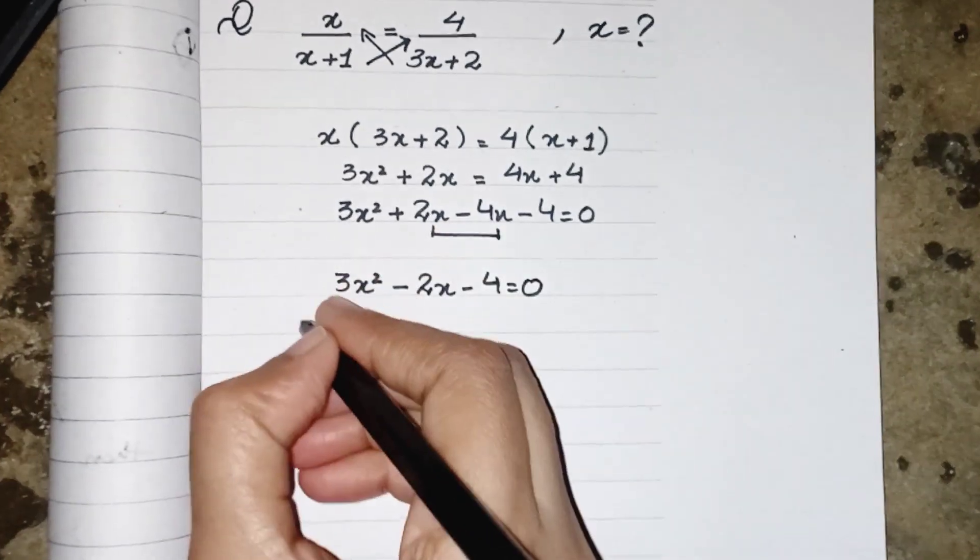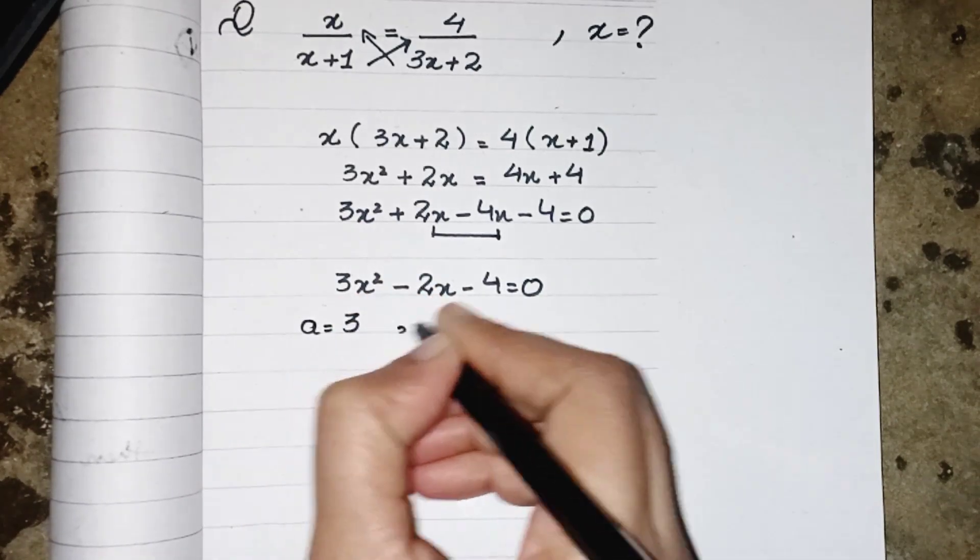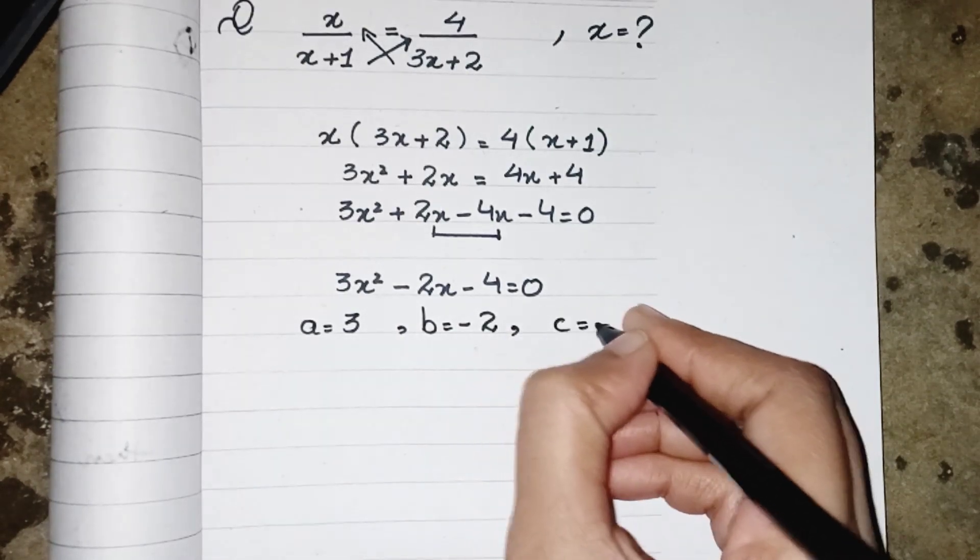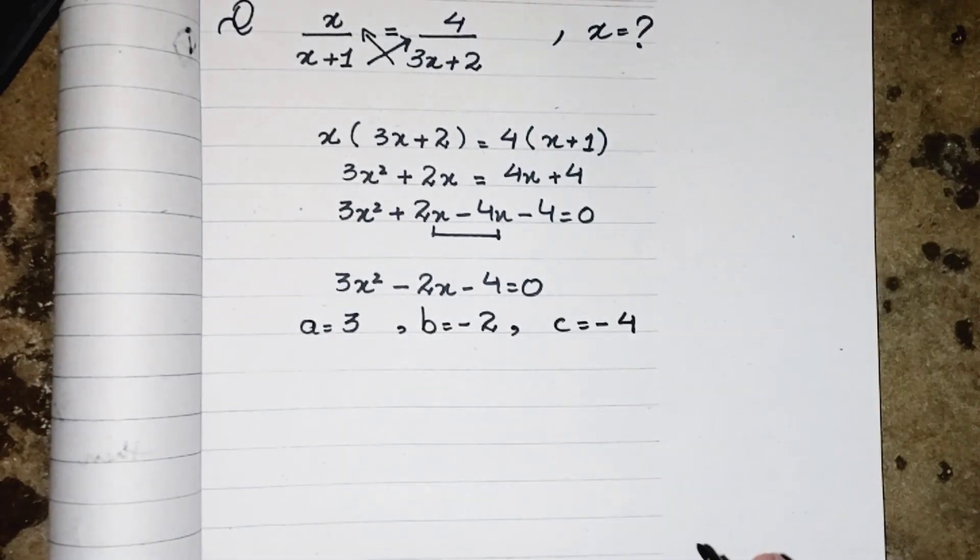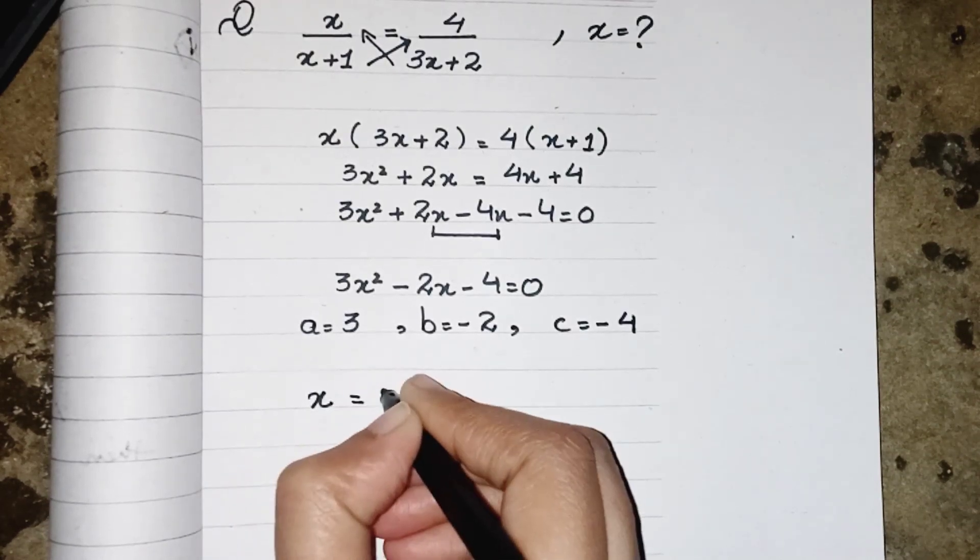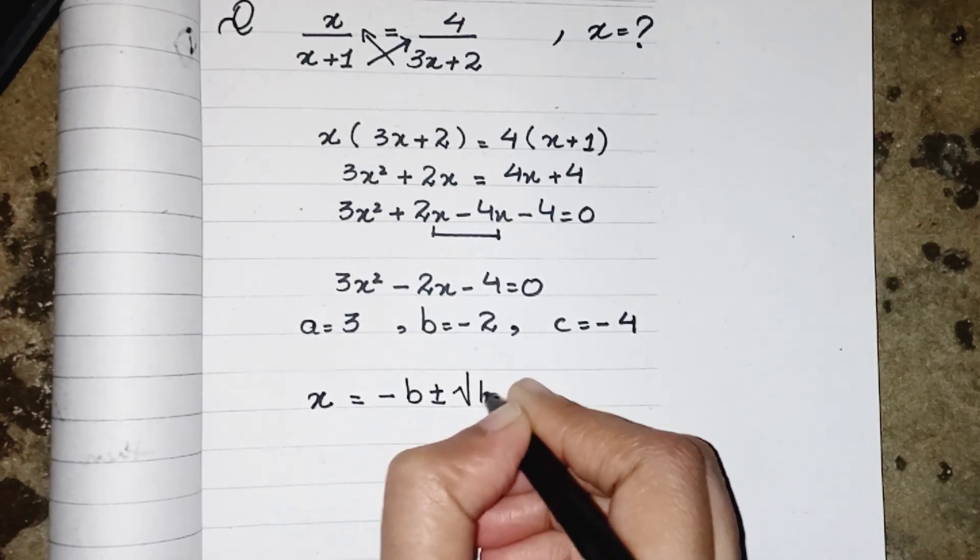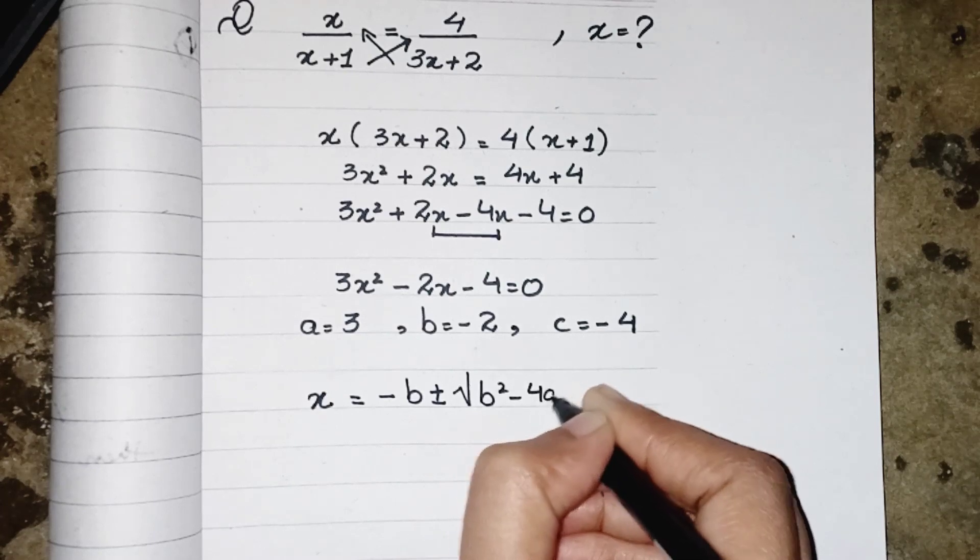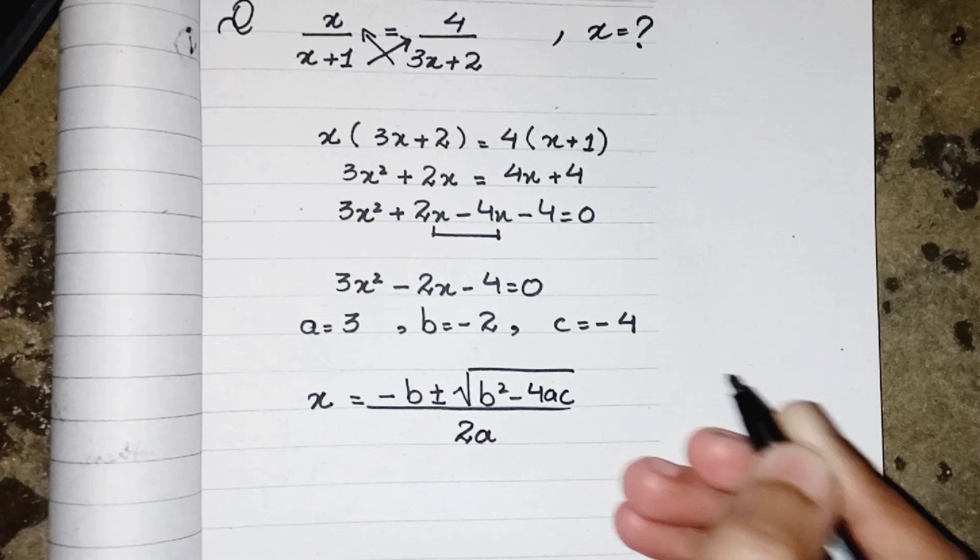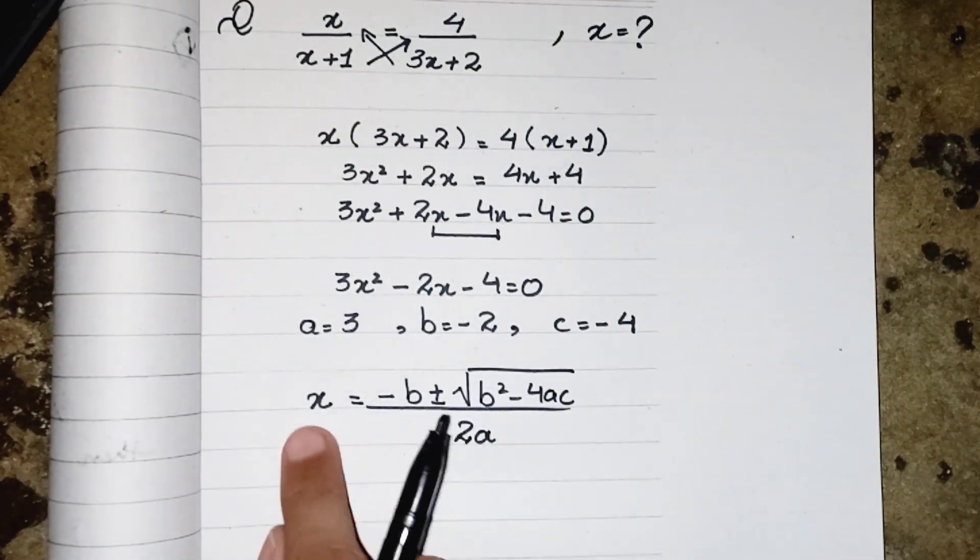So a will be equals to the coefficient of first term which is 3, b equals to -2 and c equals to -4. Where our formula is x = (-b ± √(b² - 4ac)) / 2a. So now we have to put the values in the formula to get the value of x.